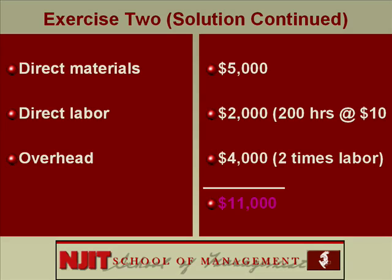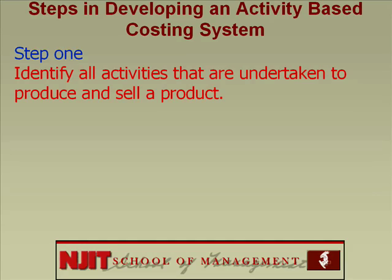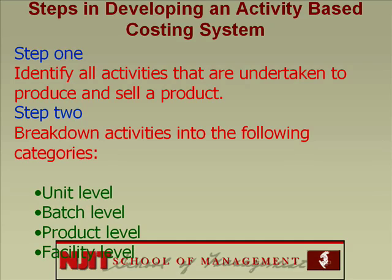Also there's a feeling that if there are any errors, it sort of washes out. Let's go to ABC. Let's talk about the steps in developing an activity-based costing system. Step 1: identify all activities that are undertaken to produce and sell a product. Step 2: break down the activities into four categories — unit level, batch level, product level, and facility level.